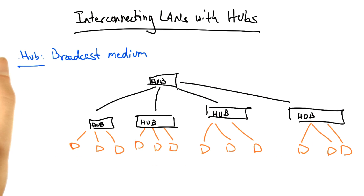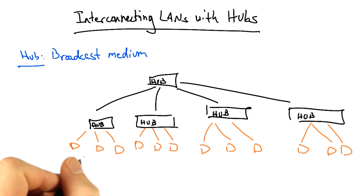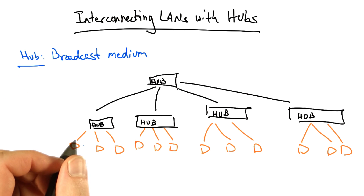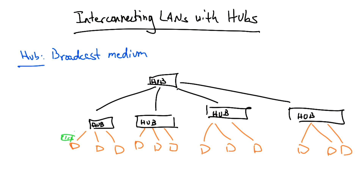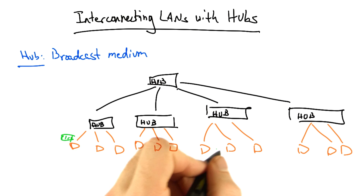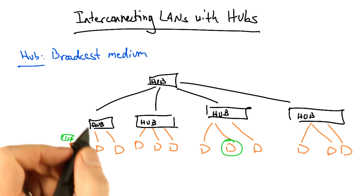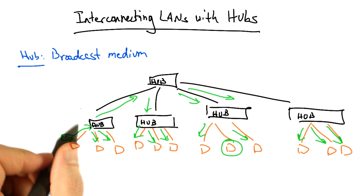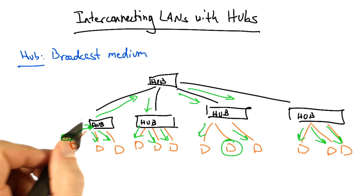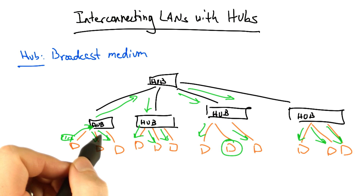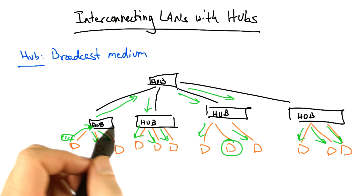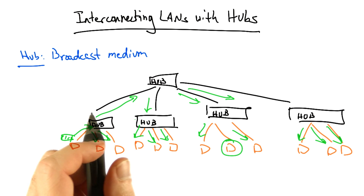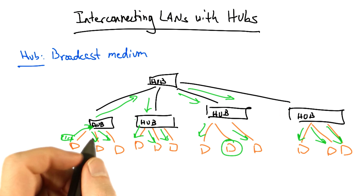A hub essentially creates a broadcast medium among all of the connected hosts, where all packets on the network are seen everywhere. So if a particular host sends a frame destined for some other host on the LAN, a hub will simply broadcast that frame it receives on an incoming port out every outgoing port. So all packets are seen everywhere, there is a lot of flooding, and there are many chances for collision.